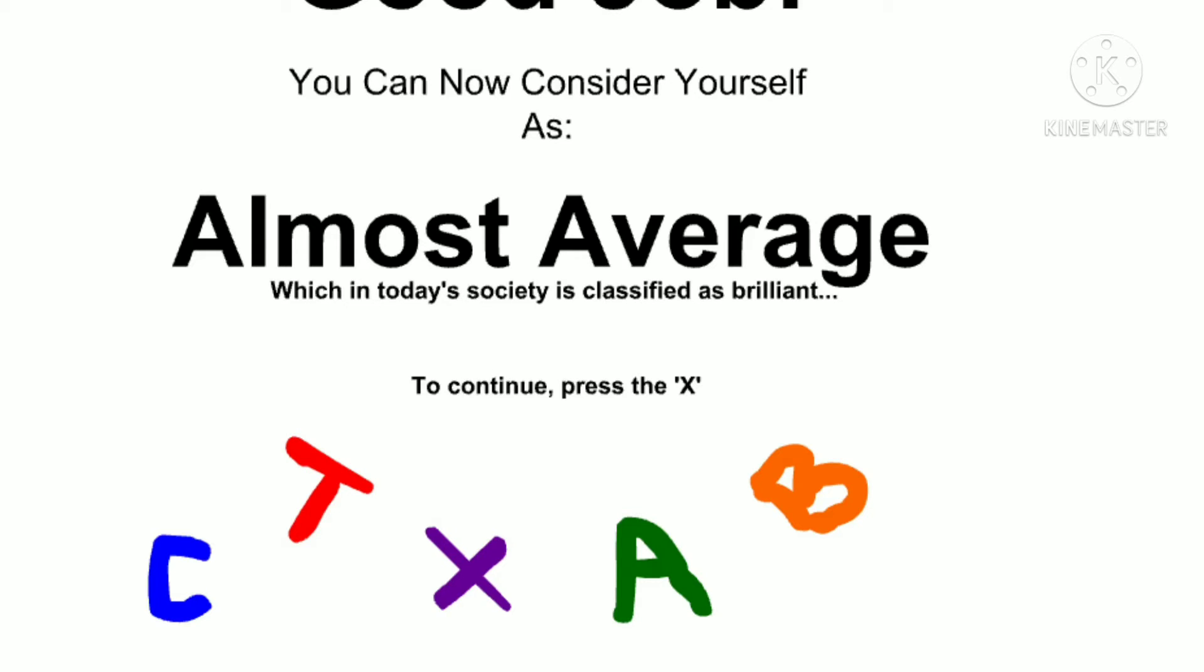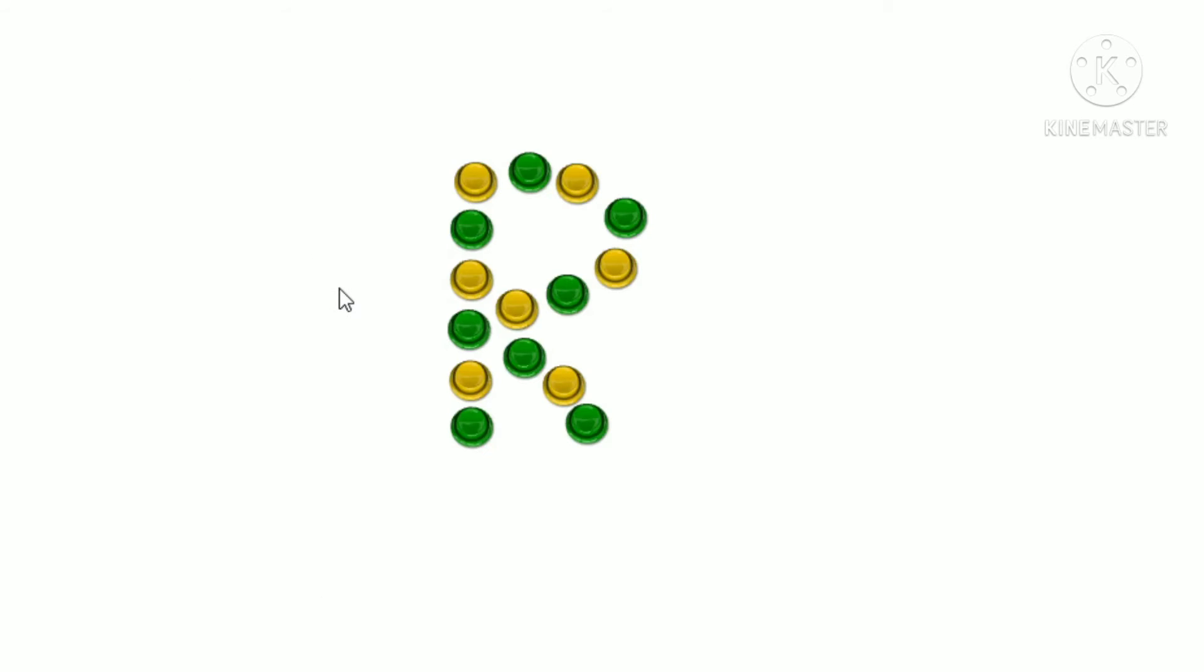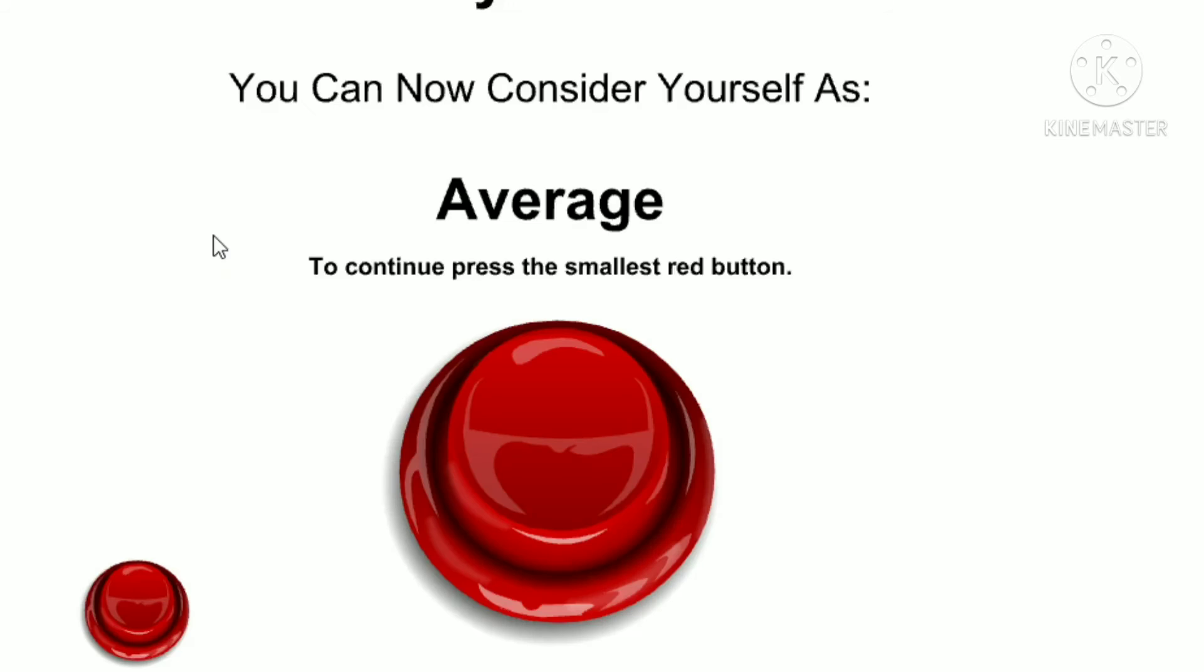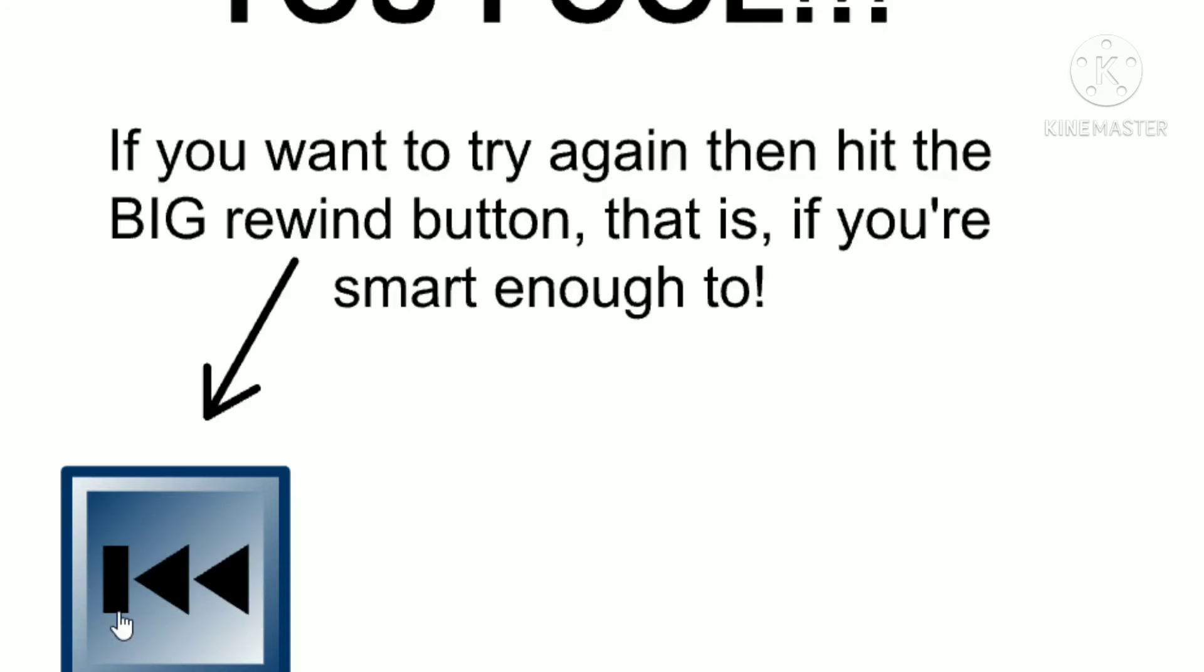Press the X, press the yellow button once, then blue button, then the yellow button again. Yellow, blue, yellow. It's just an R. I don't get it. The letter R, average. Press the smallest red button, you fool.